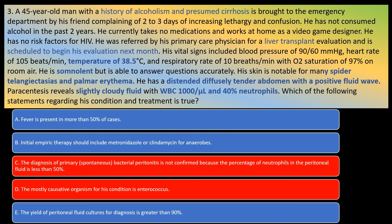A neutrophil count in peritoneal fluid of greater than 250 cells per microlitre is diagnostic — there is no percentage neutrophil differential threshold given in the books. The most common organisms are enteric gram-negative bacilli, though gram-positive cocci are often found as well. Enterococcus is therefore probably not the answer, and option C is also ruled out. Anaerobes are not very common in spontaneous bacterial peritonitis, in contrast to secondary bacterial peritonitis, so empiric antibiotics targeting anaerobes are not necessary.